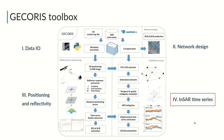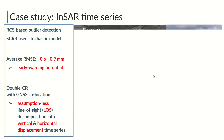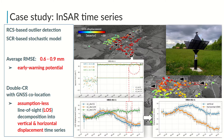Finally, the last module of GECORIS is used to estimate the InSAR displacement time series of a corner reflector network, also integrating the surrounding high-quality persistent scatterers. Given the robust RCS outlier detection, we achieve average RMSE for most of the reflectors between 0.6 to 0.9 mm, which emphasizes the potential for early warning.